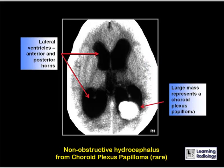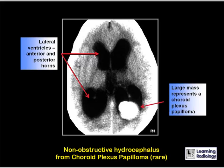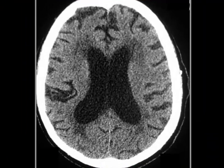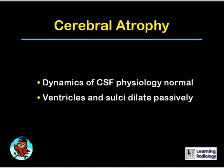This is non-obstructive hydrocephalus produced by a choroid plexus papilloma — this is rare, and the large mass to which the red arrow points represents the choroid plexus papilloma. The ventricles are markedly dilated, both the anterior and posterior occipital horns. In the case of the 63-year-old with change in mental status, the lateral ventricles are enlarged but there are also enlarged sulci over the convexities — this is cerebral atrophy, in which the dynamics of CSF physiology are normal and the ventricles and sulci dilate passively.